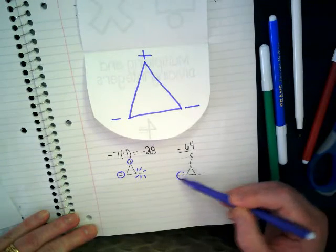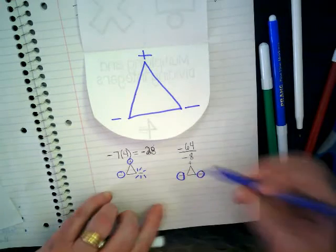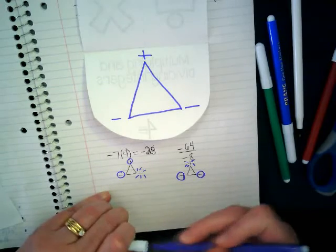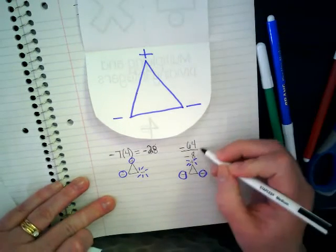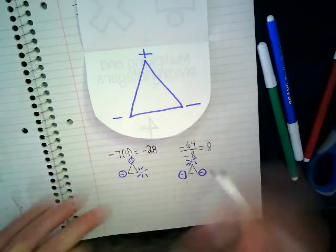This negative and this negative would be covered up and that's going to leave me with a positive. So I know my answer is going to be positive. And 64 divided by eight is eight.